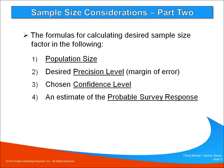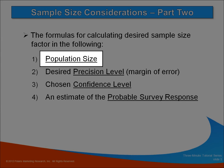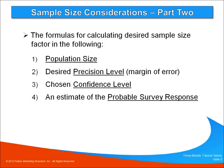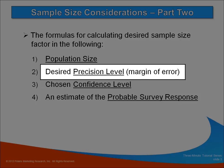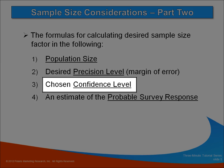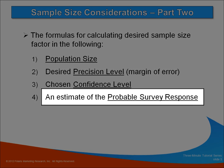There are four critical pieces of information you'll need as input for calculating your desired sample size: an estimate of the population size, your desired precision level as expressed using a margin of error, the desired confidence level, and an estimate of the probable survey response.